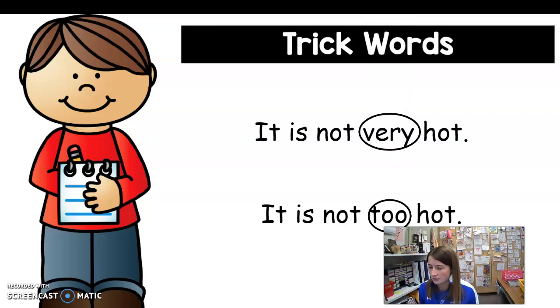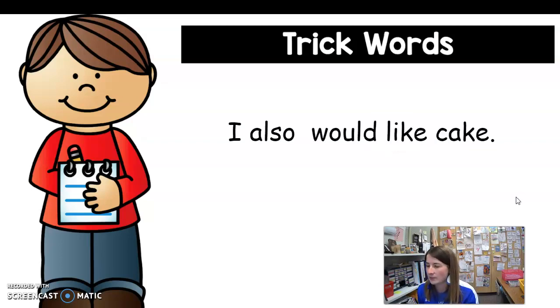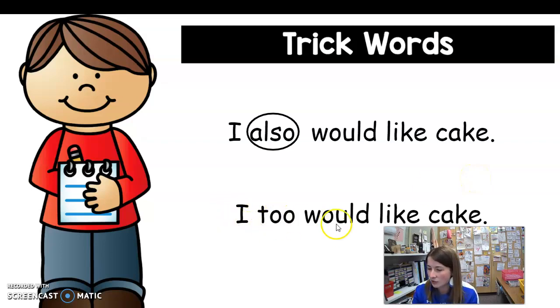Let's sky write, you ready? T-O-O, too. All right, how about this one? Let's read it. I also would like cake. I would also like cake. You have the word also, A-L-S-O, also. I see some long vowel words in there. I see cake and I see like. Those are long vowels. All right, let's read this sentence. I too would like cake. There's T-O-O. Remember, too and also, another word for too would mean also. You can use these words interchangeably with the correct sentence.